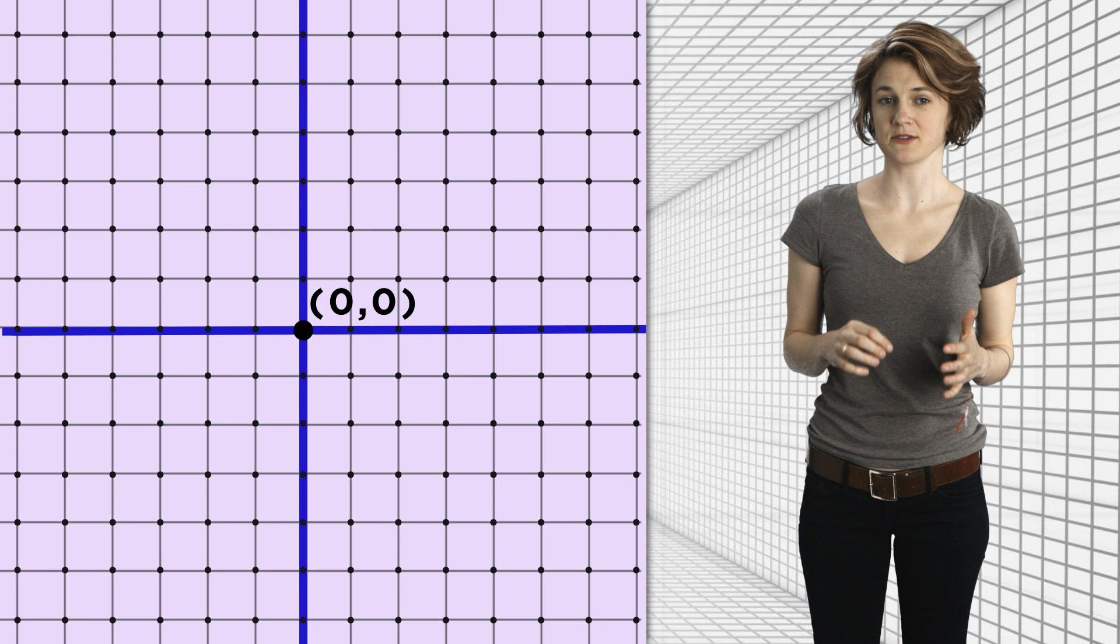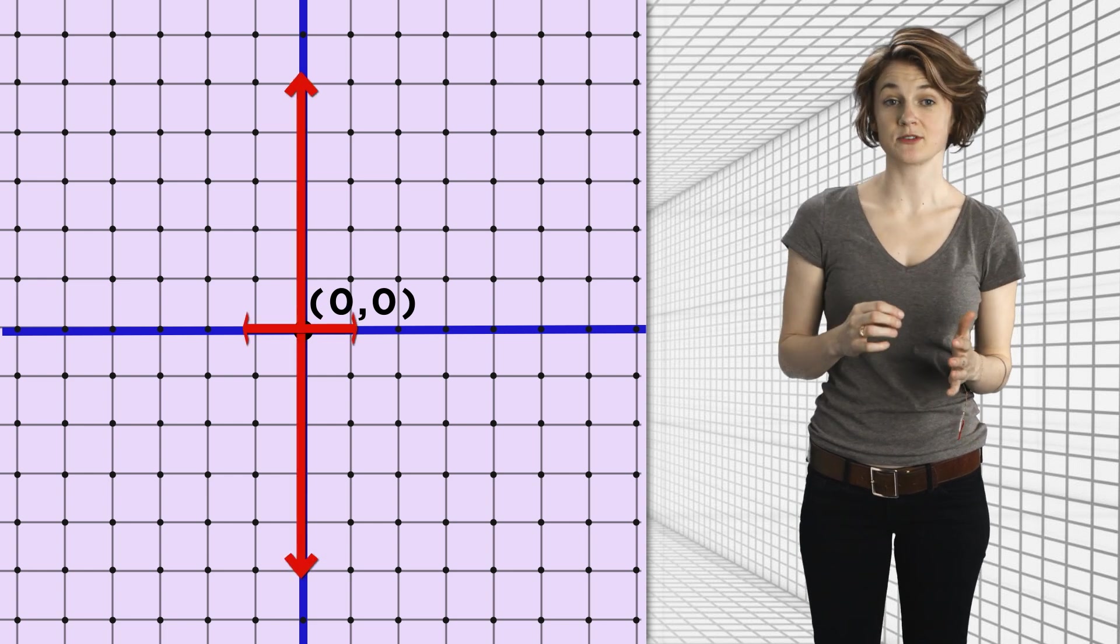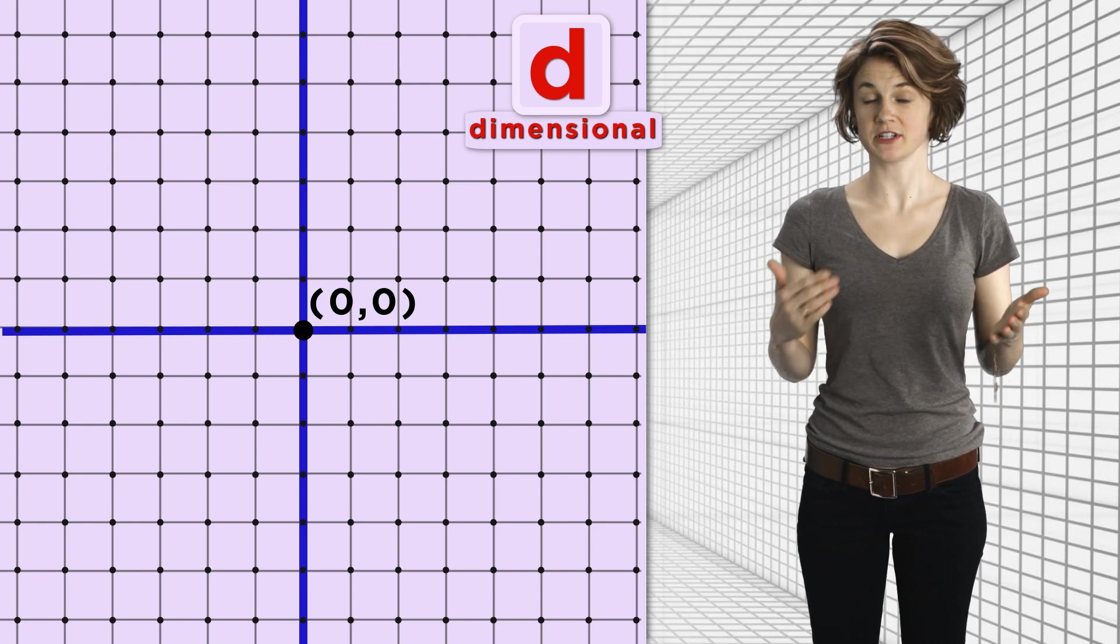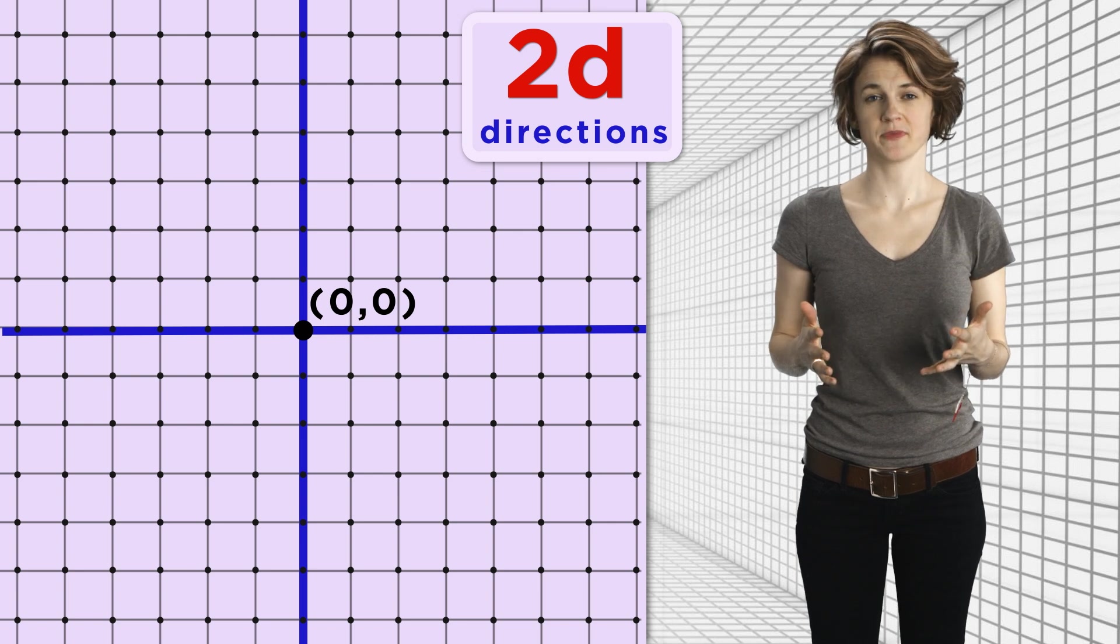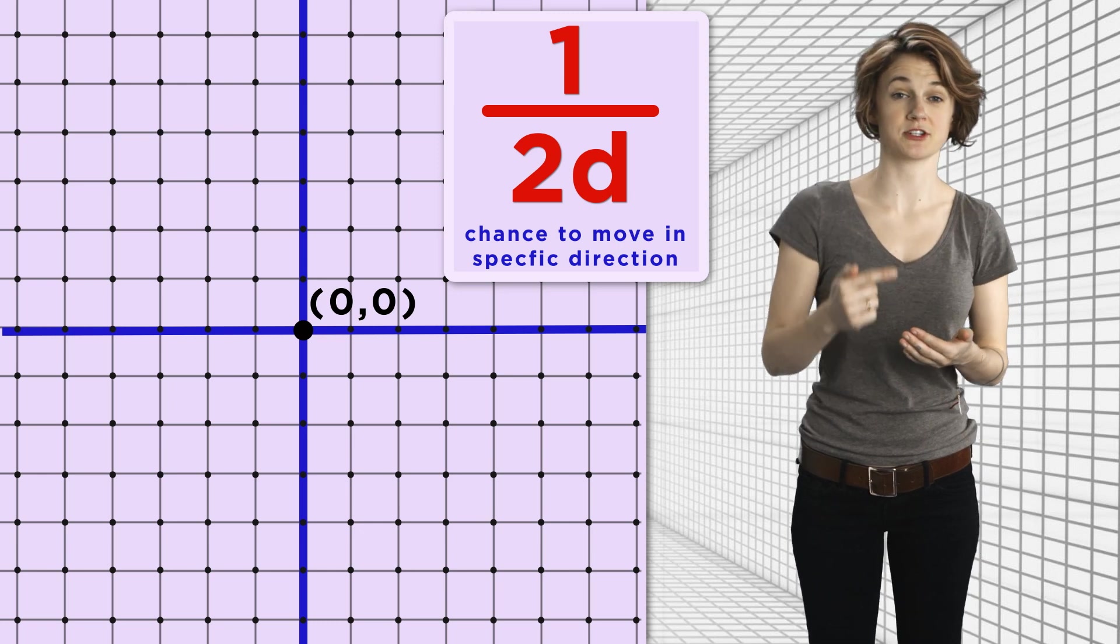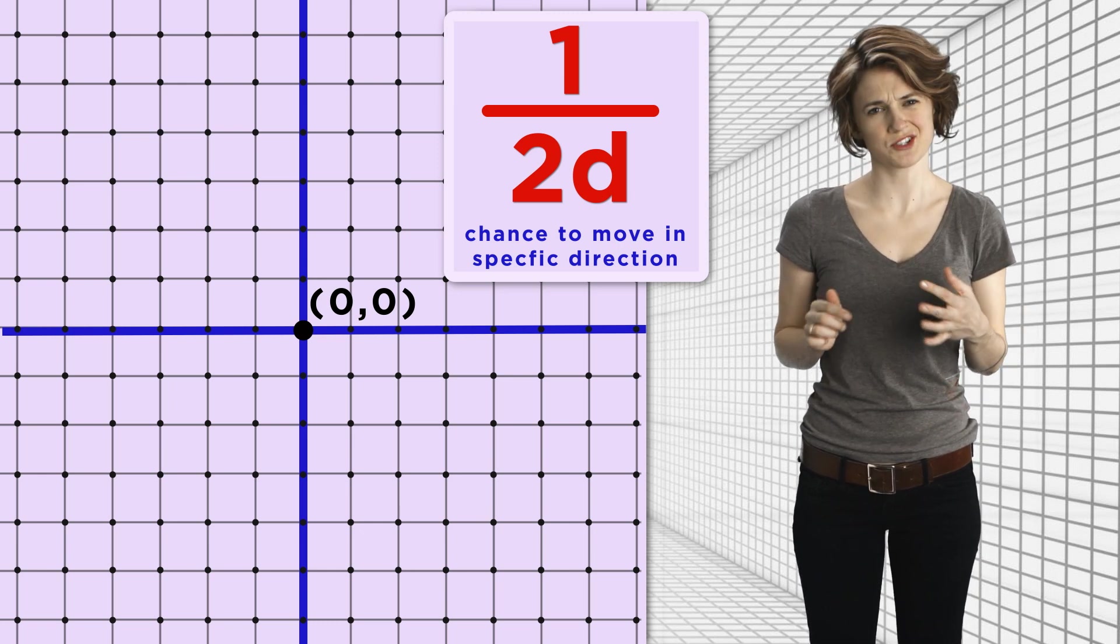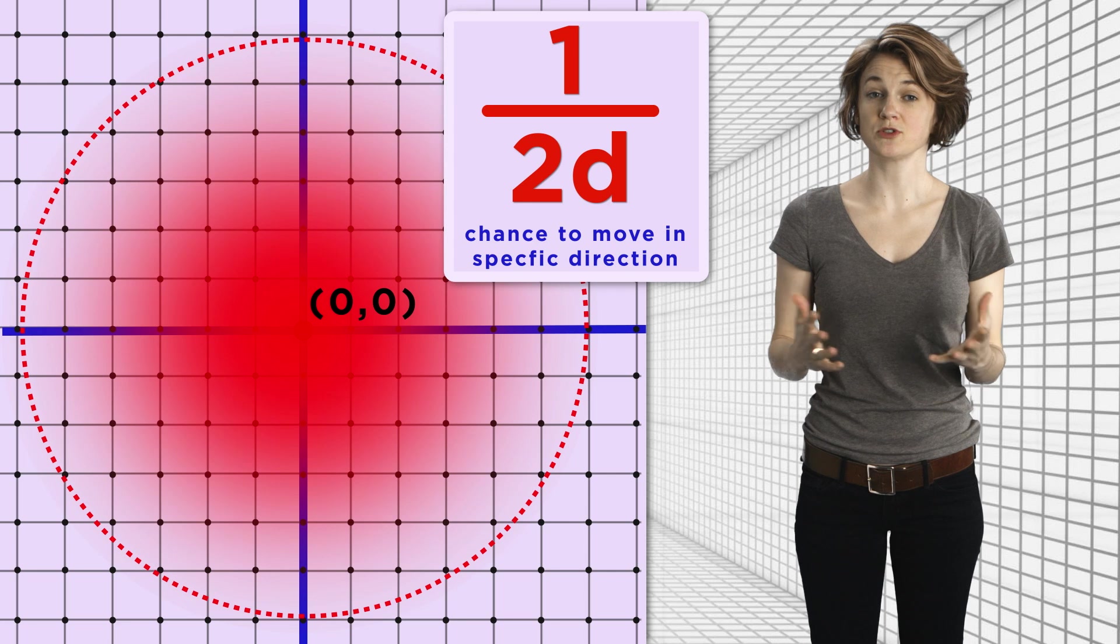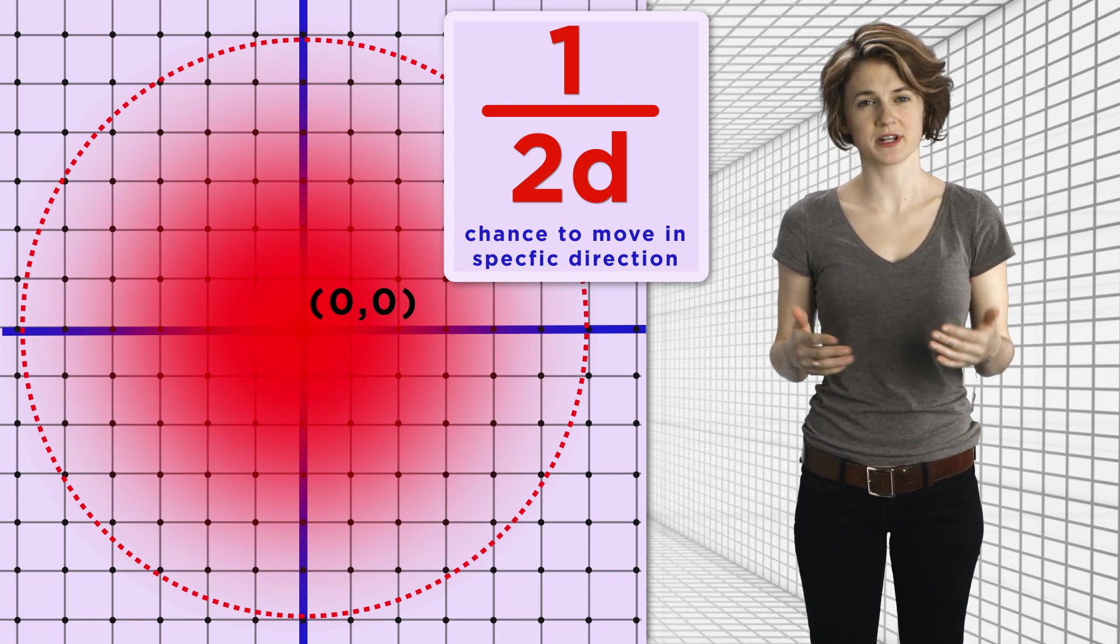What we just looked at is a random walk on the integers, which is one-dimensional. But the whole thing works in any dimension. For example, on the two-dimensional integer lattice, which looks like a grid, you start at the origin (0,0) and are equally likely to move up, down, left, or right. For an arbitrary number d, if you're randomly walking along a d-dimensional integer lattice, there are 2d directions to move. Since you're equally likely to move in any direction, there's a 1 over 2d chance you'll move in a specific direction. Pretty much everything we've said so far is still true. You're still most likely to be at the origin—it's the expected value. And after many steps, the distribution of the random walk will look like a bell curve, but in higher dimensions.